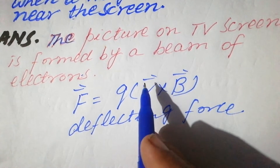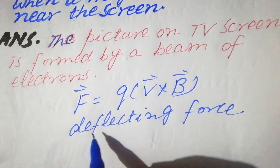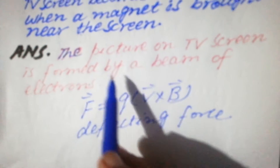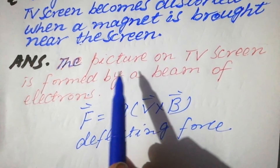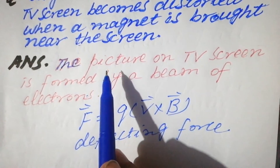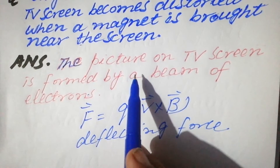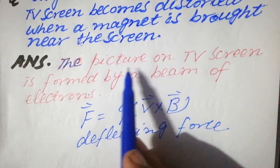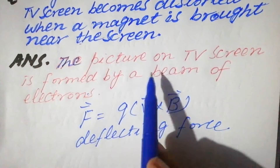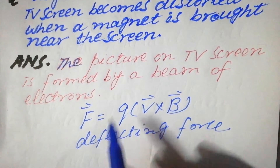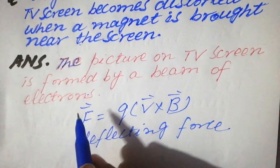Because it is a deflecting force, the magnetic force will deflect these electrons at 90 degrees, and that is why the picture becomes distorted.